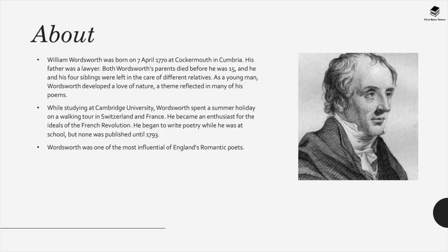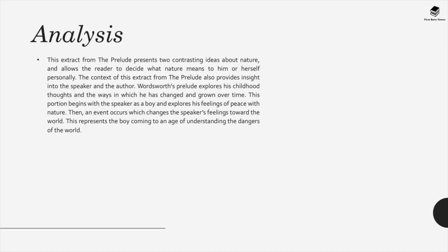The next poem is an extract from The Prelude by William Wordsworth. Wordsworth was a Romantic poet born in 1770 in Cumbria. His father was a lawyer, but both parents died before he was 15, and he and his four siblings were left in the care of different relatives. As a young man he developed a love of nature, which is reflected in much of his poetry. This extract comes from a much longer poem and presents two contrasting ideas about nature.